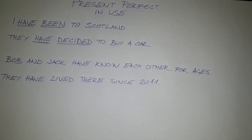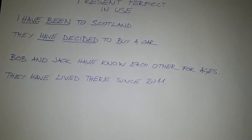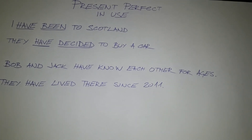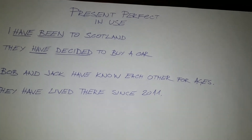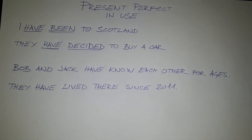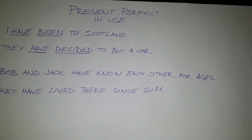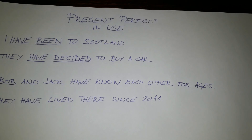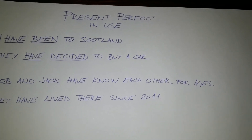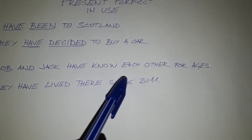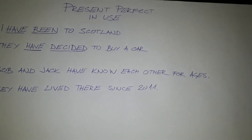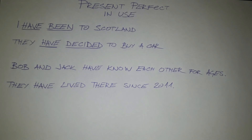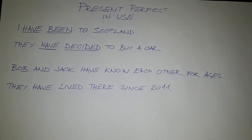Let's have a look at the present perfect in use. We use the present perfect for things that happened in the past where it's not important when they happened. For example: I have been to Scotland — it's not important when I've been there, it's important that I've been to Scotland. They have decided to buy a car — once again it's not important when they decided, but the decision alone is important. We also use the present perfect for things that started in the past but have continued into the present. For example: Bob and Jack have known each other for ages — they met in the 1970s and they are still friends. They have lived there since 2011, so they moved there in 2011 and they've continued to live there.